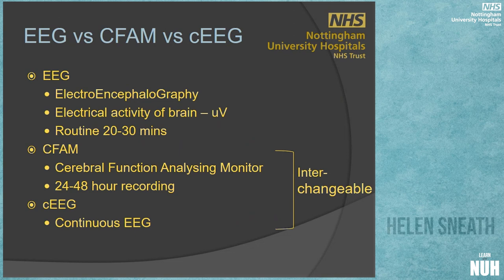When we come and do a routine EEG on the unit, we record for about 20 or 30 minutes. That's the difference between EEG and CFAM. CFAM is a cerebral function analysing monitor, and that term actually goes back to the 1960s, when people realised they needed to record EEG activity over a long period of time. So they designed a machine that would show trended activity rather than just the raw EEG waveforms.